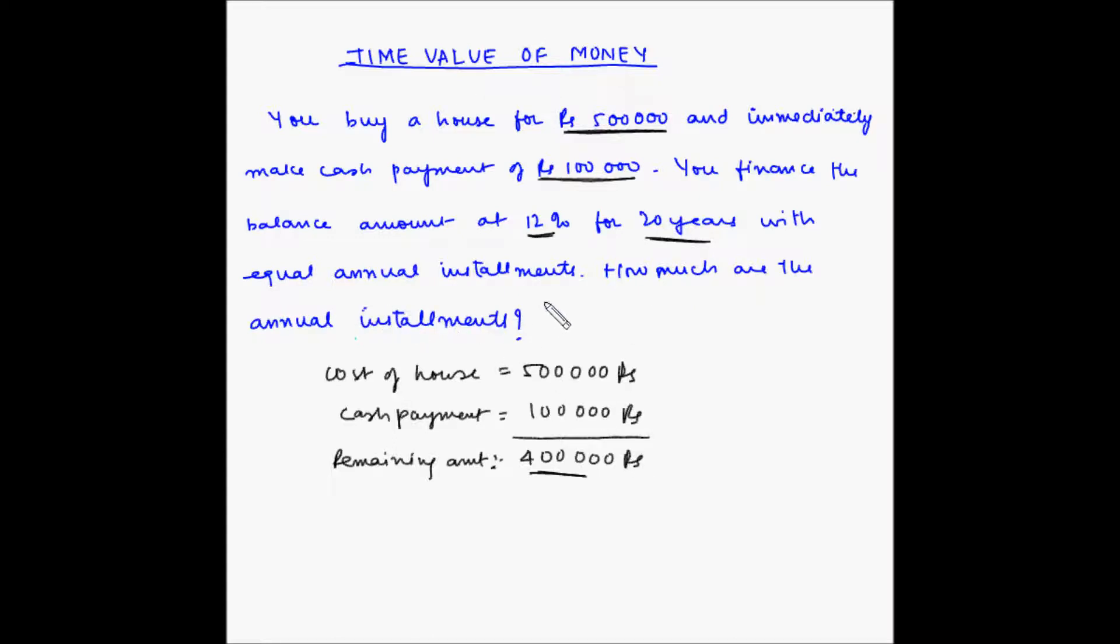And the entire amount needs to be repaid back to the bank in 20 years with equal annual installments. Now we have to find out what is the annual installment that you need to pay. The loan is 20 years: 0, 1, 2, 3, and so on, and then 19 and 20.